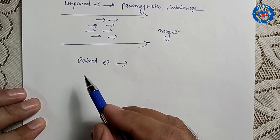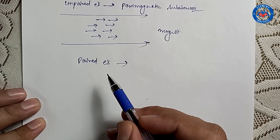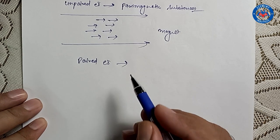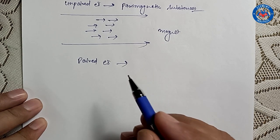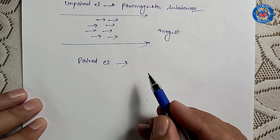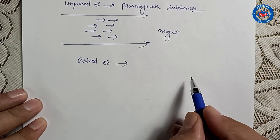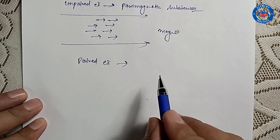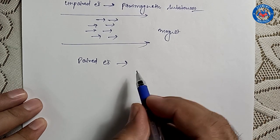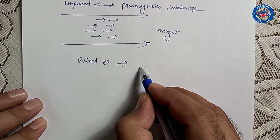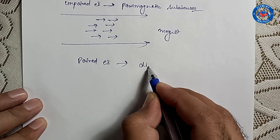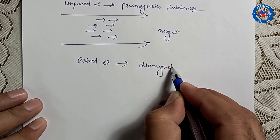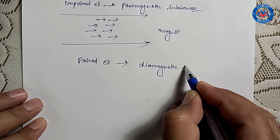On the other hand, a diamagnetic substance has paired electrons whose opposite spins cancel each other's magnetic field, so it cannot be magnetized by the external magnetic field. That is why they are known as diamagnetic substances.